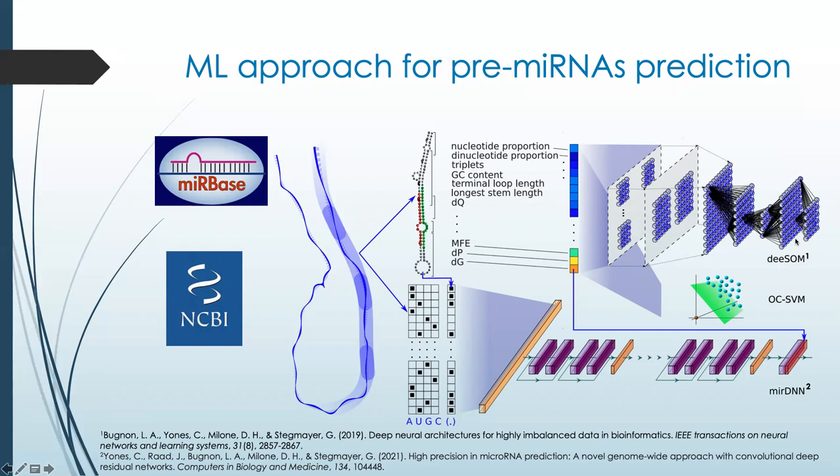The second model is OCSVM, a one-class support vector machine typically used for solving the problem of predicting precursor microRNAs. The third model is a recently published algorithm called MyrDNN.